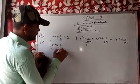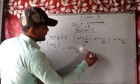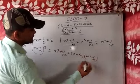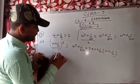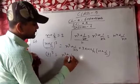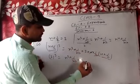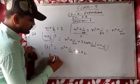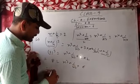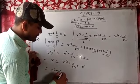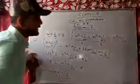For x cube plus 1 by x cube: using x plus 1 by x whole cube equals x cube plus 1 by x cube plus 3 into x into 1 by x into x plus 1 by x, substituting 2: 2 cube equals 8 equals x cube plus 1 by x cube plus 6. So x cube plus 1 by x cube equals 8 minus 6 equals 2.